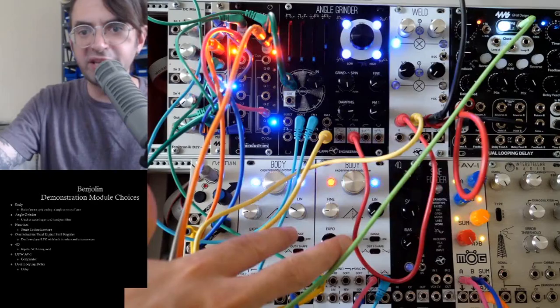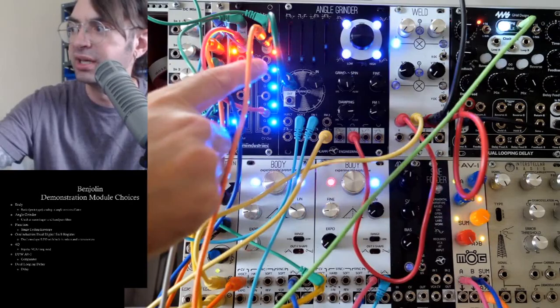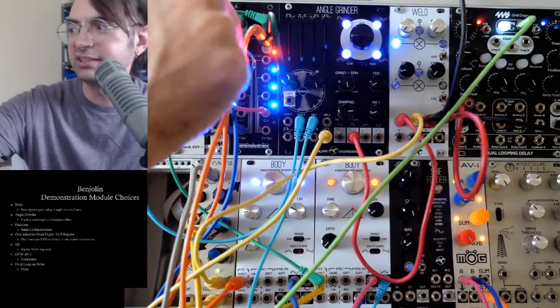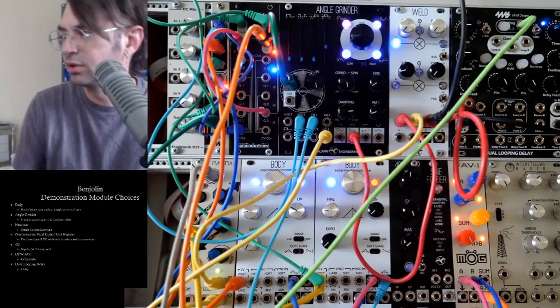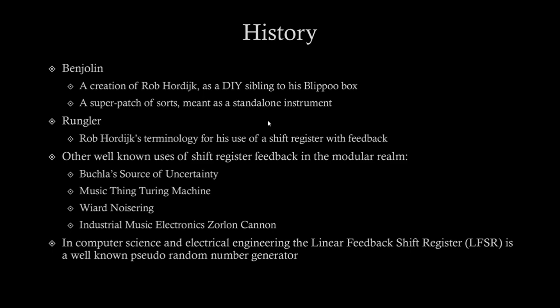The next generative patch I want to show is something inspired by Rob Hordyck's Pendulin. I'm using two basic triangle core VCOs, the Angle Grinder as a bandpass filter, an OMI Industries dual digital shift register patched up as a single eight-step shift register instead of two four-steps. To do that, I use the fourth step of one patched into the data input of the second, with the same clock going to both — also a DPW comparator, a VCA, delay, and a cycling envelope.